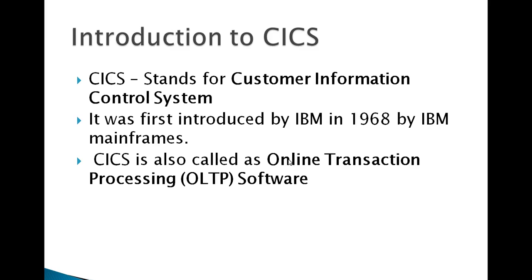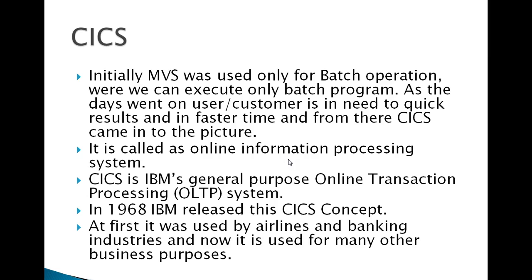In CICS, we have a set of transactions. I'll be covering topics like what is a transaction, what is multitasking, multi-threading, and pseudo-conversation. Initially, mainframes were used only for batch operations — we could only execute batch programs. As the days went on, users and customers needed quick results fast, and from there CICS came into the picture. It is IBM's general-purpose online transaction processing system, released in 1968.